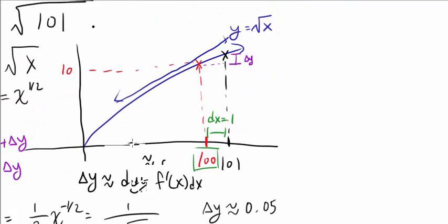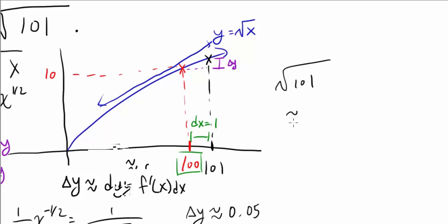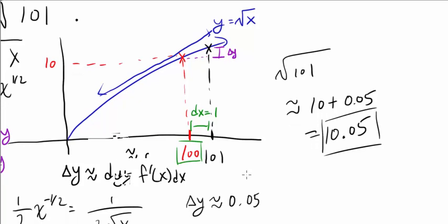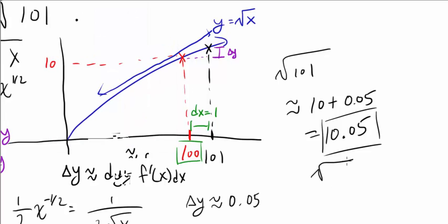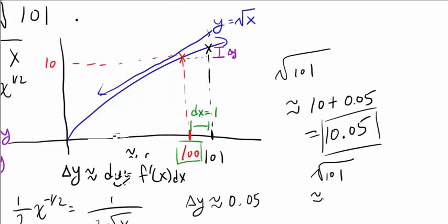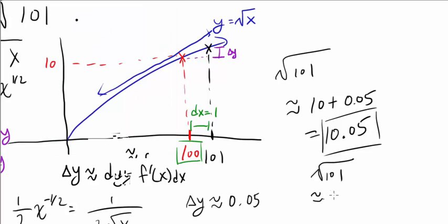So what's our value of square root of 101? Well, that's about square root of 100, 10, plus our approximate value of delta y or 0.05 or 10.05. So that's our guess. Now, how close is this? What's the actual value of square root of 101? Well, using the calculator, we got square root of 101 is about 10.0499. So 10.0499. And as you can see, our approximation is pretty close.